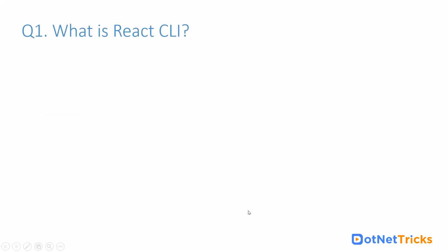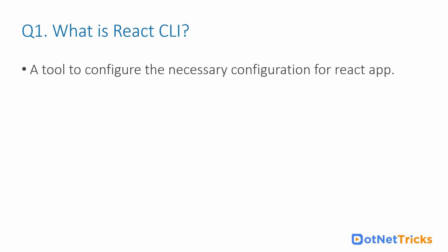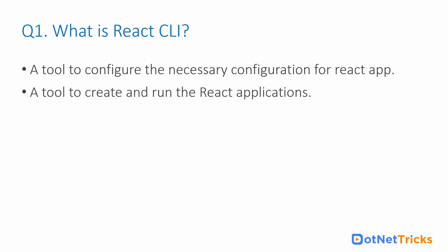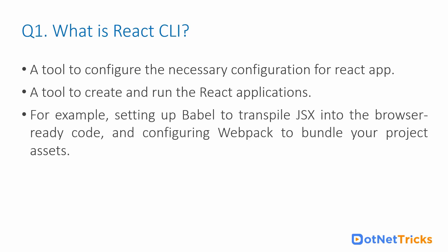What is React CLI? React CLI is a tool to handle the necessary configuration for building a React application. It helps us to create, build, and run a React application. For example, setting up Babel to transpile JSX into JavaScript for the browser, and configuring webpack to bundle your project assets — these are tedious things to do manually, but React CLI handles them automatically.